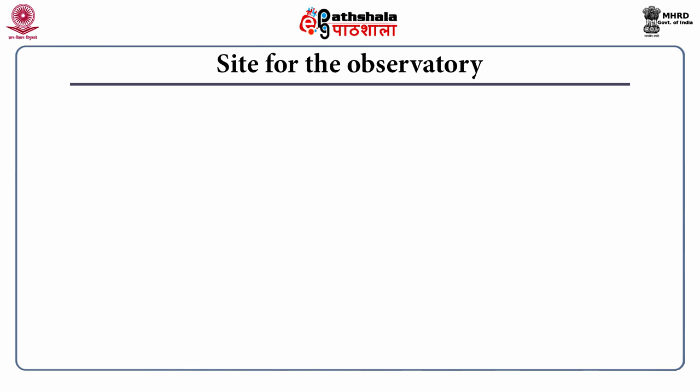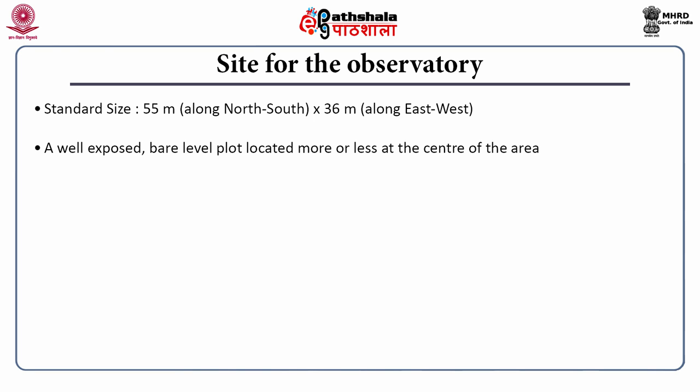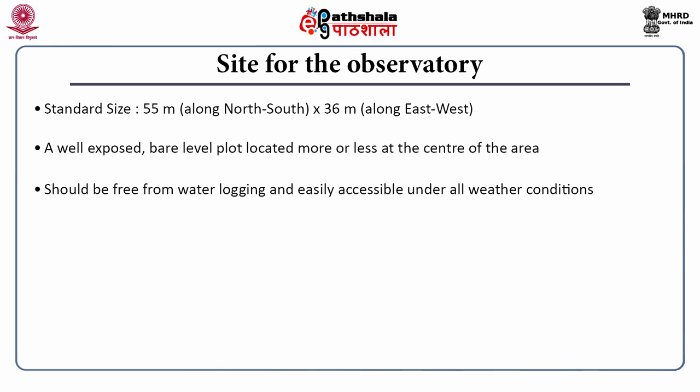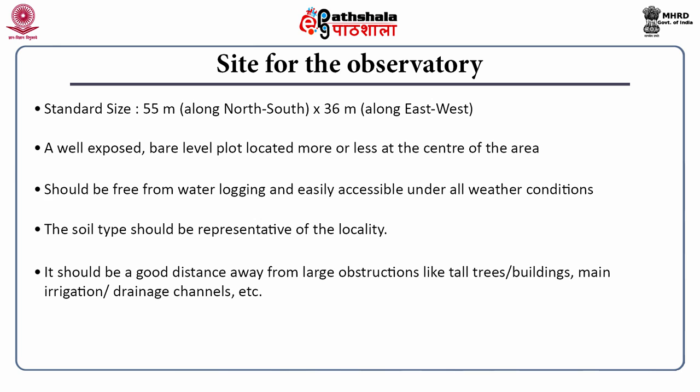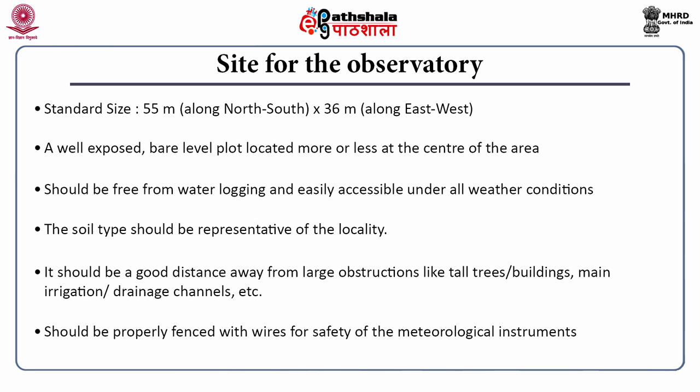What should be the ideal site for the observatory? The IMD, which is the nodal agency of weather observations and weather services in this country, has prescribed the standard size as 55 meters along north-south direction and 36 meters along the east-west direction. It should be a well-exposed, bare, level plot located more or less at the centre of the area. It should be free from water logging, easily accessible, and the soil type should be representative of that locality. It should be a good distance away from large obstructions like tall trees, buildings, and main irrigation or drainage channels. It should be properly fenced with barbed wire for safety of the instruments as well as for free air flow.